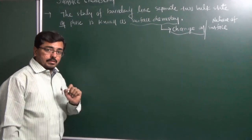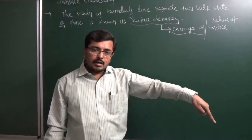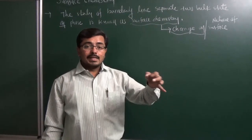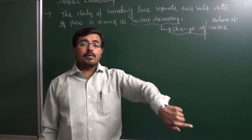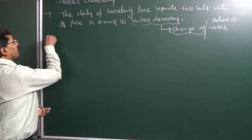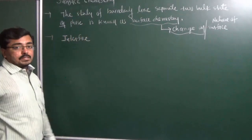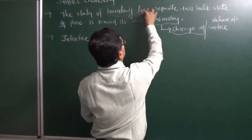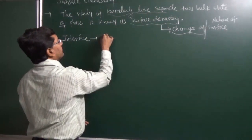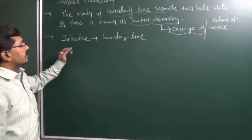In a Cricket Match, it is observed that a boundary line is placed on the ground. The inside of the cricket ground and the outside are separated by this boundary line. So this boundary line is nothing but an interface. The boundary line which separates two states or two phases is known as an interface. So, interface is nothing but a boundary line separating two phases.